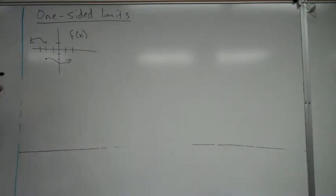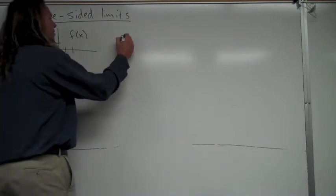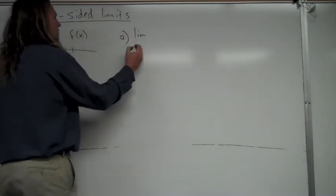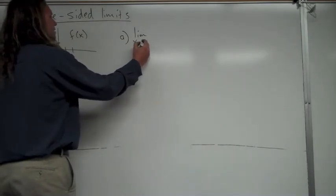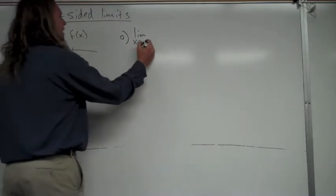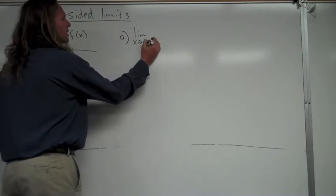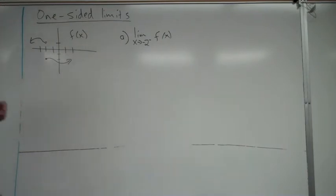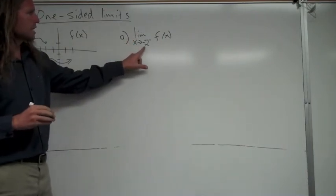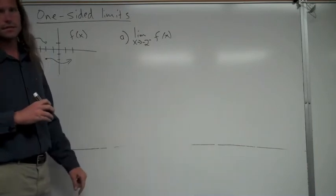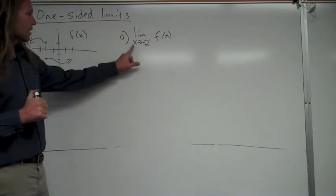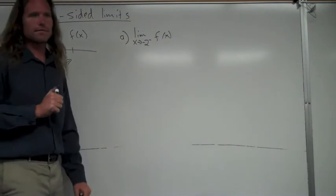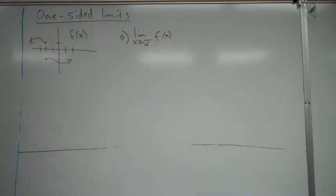Let's take a look at this graph here, f of x. Here's what a one-sided limit is. We have the limit as x approaches negative 2 — and notice there's a little negative sign up here — of f of x. This is read as the limit as x approaches negative 2 from the left of f of x. That little negative makes it from the left. So you're only looking at this limit as it's approaching negative 2 from the left.